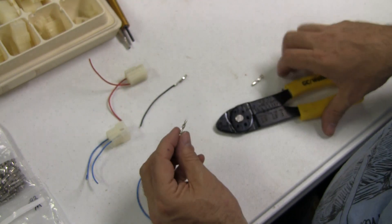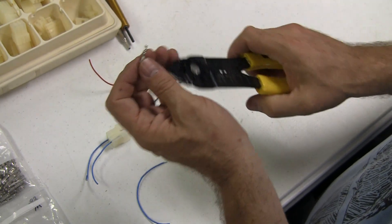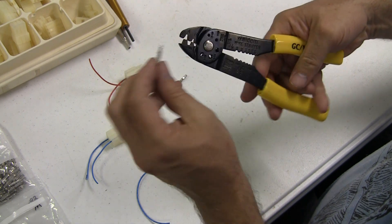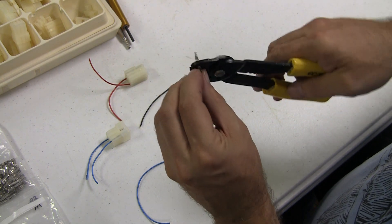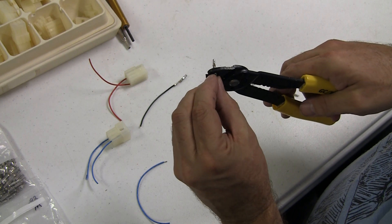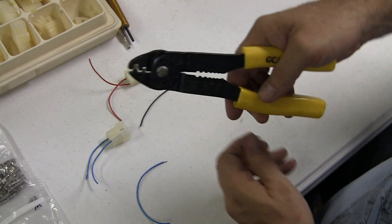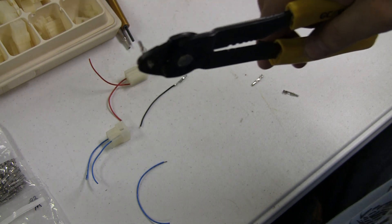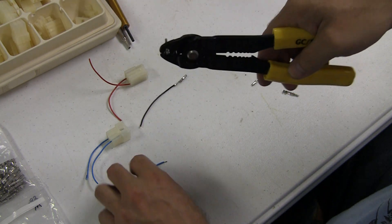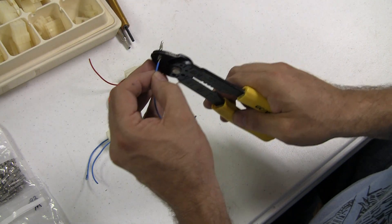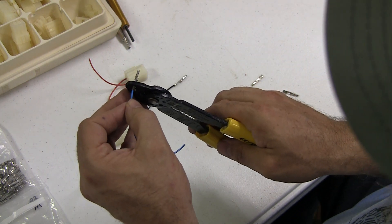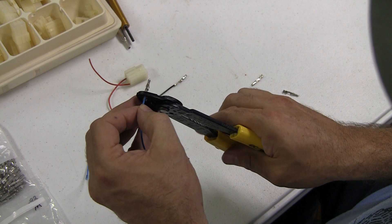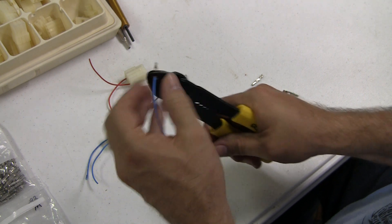So first thing we'll do is we'll load this into this and we'll make sure that the top pointy part where the letter A is, and we're going to line this up so it's on the inner tab. So there it is right there, if you can see, and we're going to feed this wire in. Okay, just in, right there, and then squeeze and crimp.